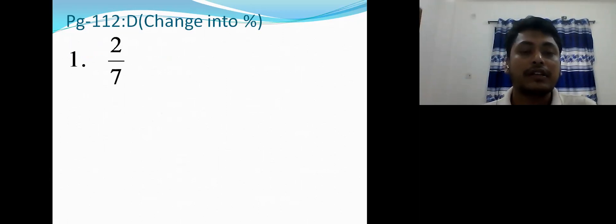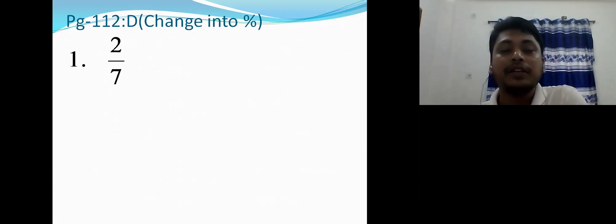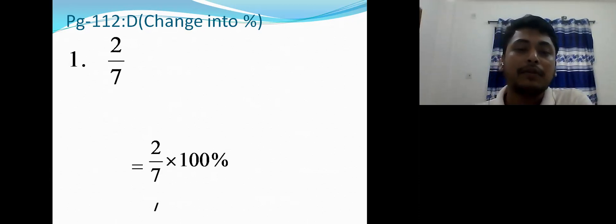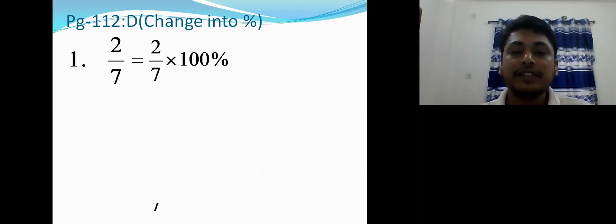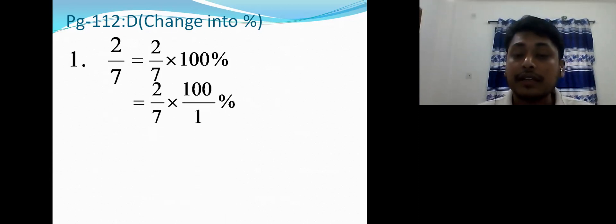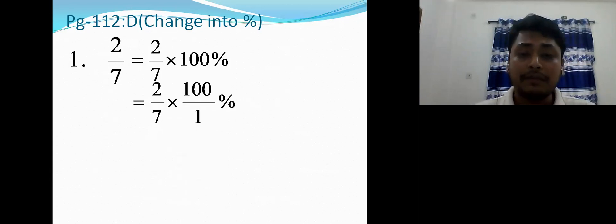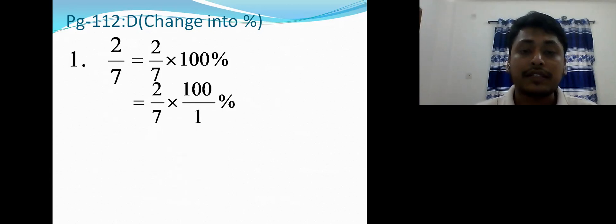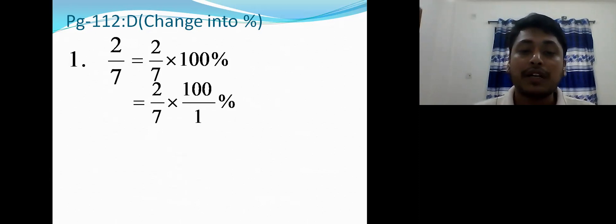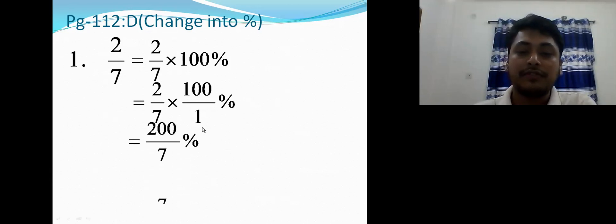Now the question is 2/7 — change to percentage. So 2/7 multiplied by 100 percent. We can see that 7 and 100 cannot be cancelled. So we multiply upper numbers together and lower numbers together: 2 × 100 = 200 in the numerator, and 7 × 1 = 7 in the denominator. So we get 200 divided by 7.